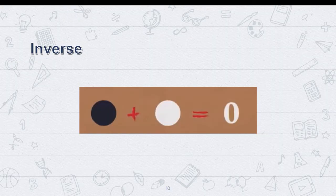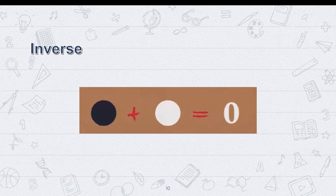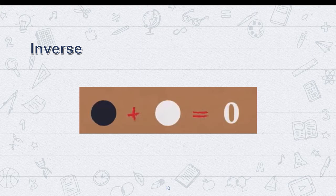For the inverse property, every group element has an element called its inverse. When the two are brought together using the group's operation, they result in the identity element. So they can be thought of as canceling each other out.